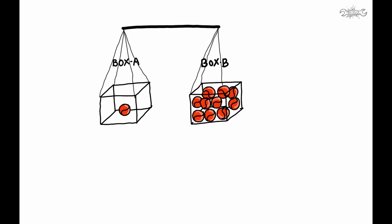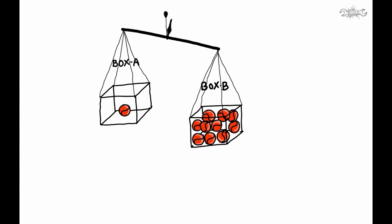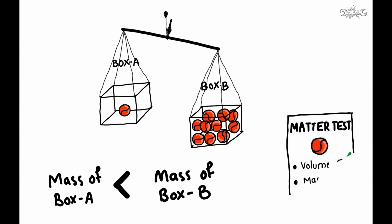Lift both boxes one at a time. Box A weighs well lighter than box B. We can say that the ball has some mass and mass increases as the number of balls increase. Congrats! We concluded that the ball has both mass and volume. So it is matter.